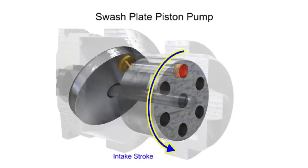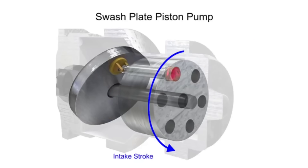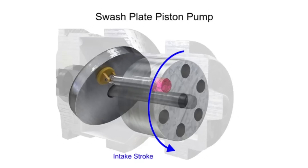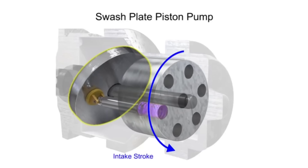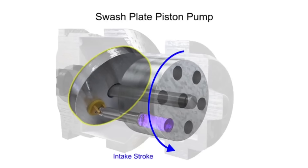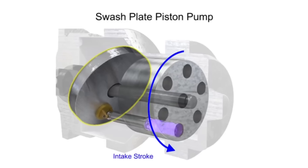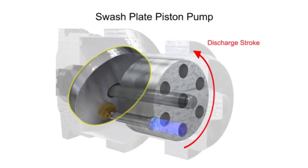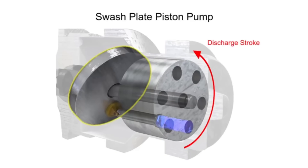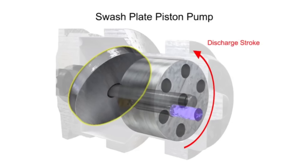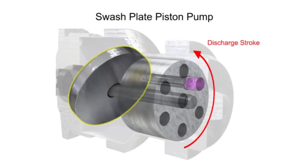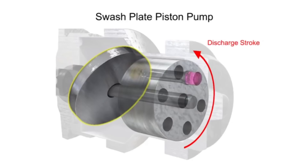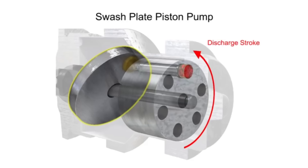On the intake stroke, a spring ensures the pistons pull back and maintain contact with the swash plate, causing fluid to fill the empty cavity left behind. On the discharge stroke, the angle of the swash plate forces the pistons back inside the piston block and discharges the fluid. The greater the slant on the swash plate, the further the pump pistons move and the more fluid they transfer.